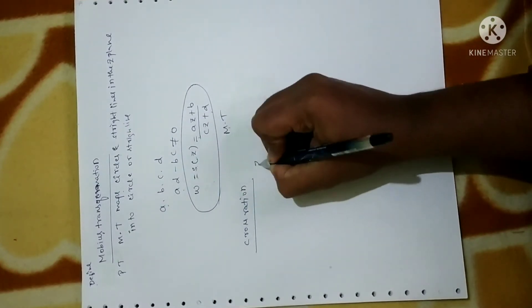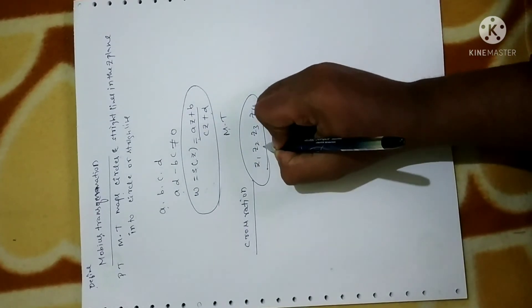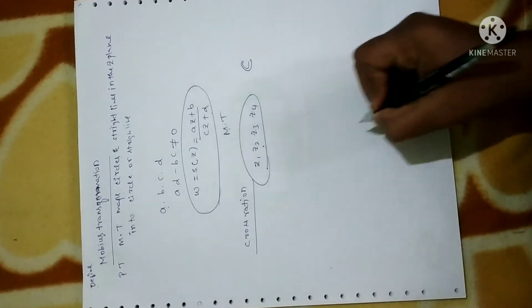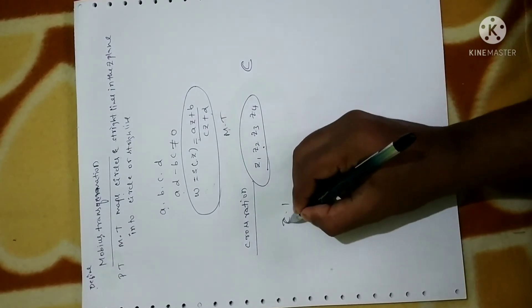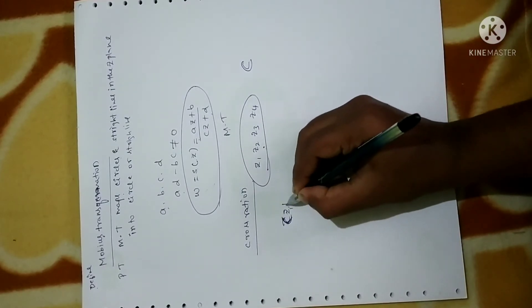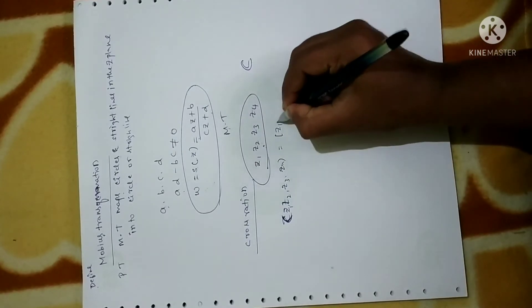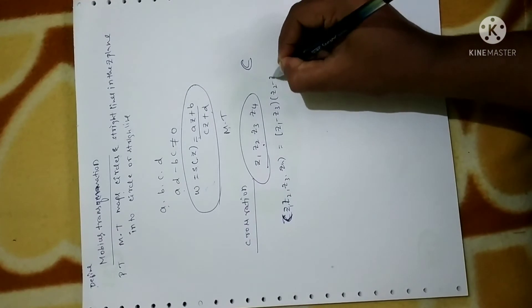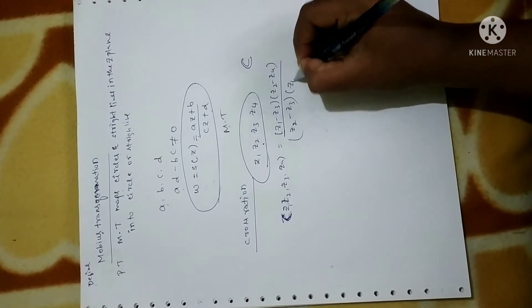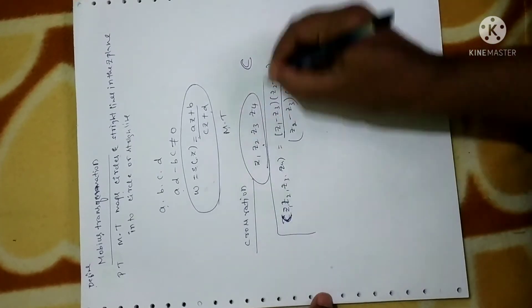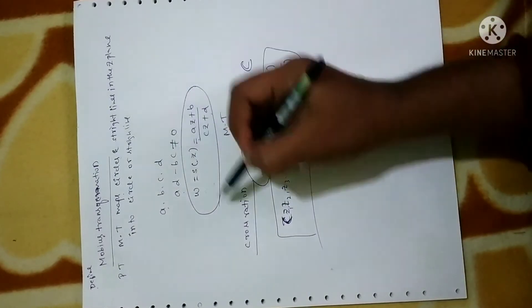Now let me explain the next concept: cross ratio. Suppose any four points z1, z2, z3, z4 are given in the complex plane C. Then the cross ratio of these four points is given by: cross ratio of (z1, z2, z3, z4) = (z1 - z3)(z2 - z4) divided by (z2 - z3)(z1 - z4). This is the definition of cross ratio.